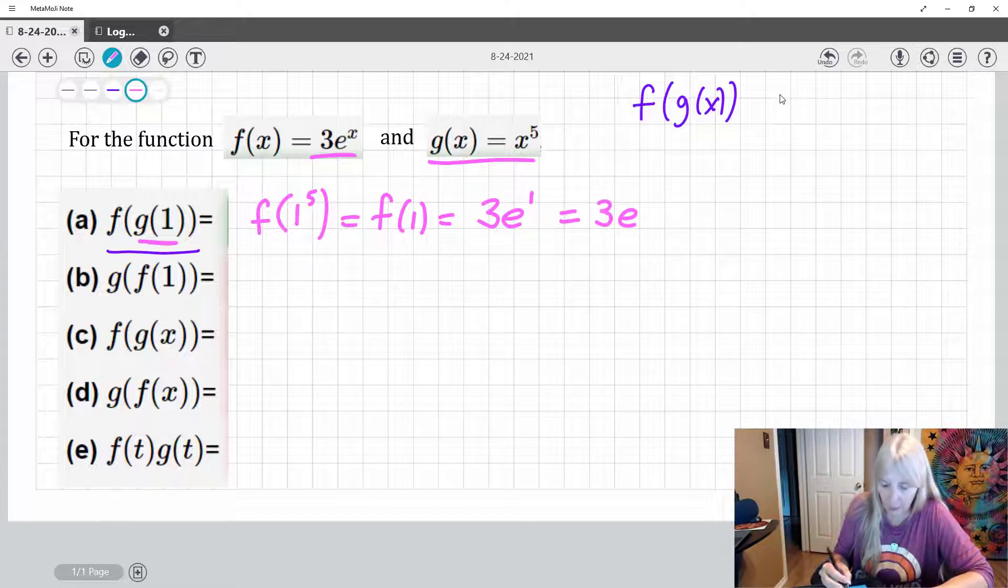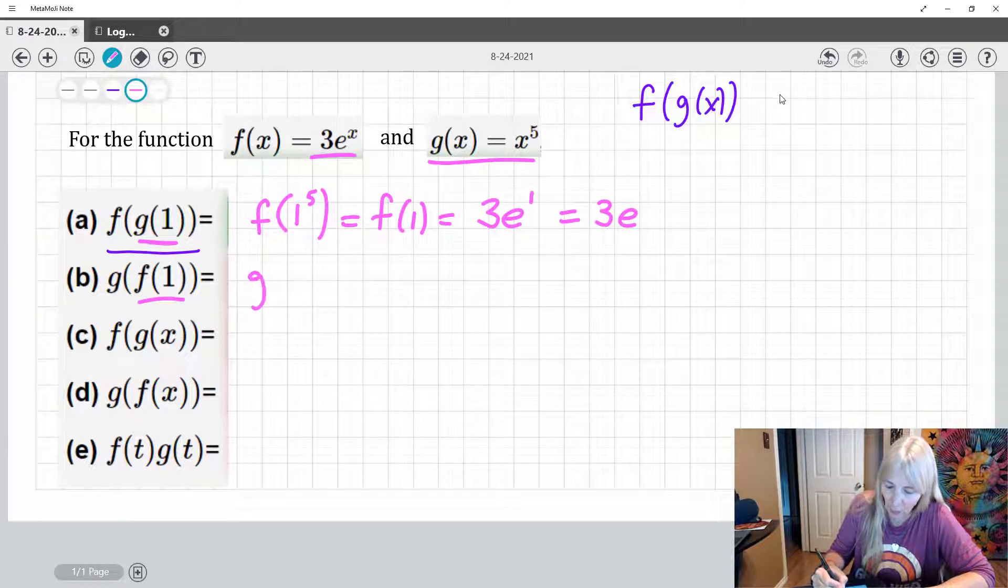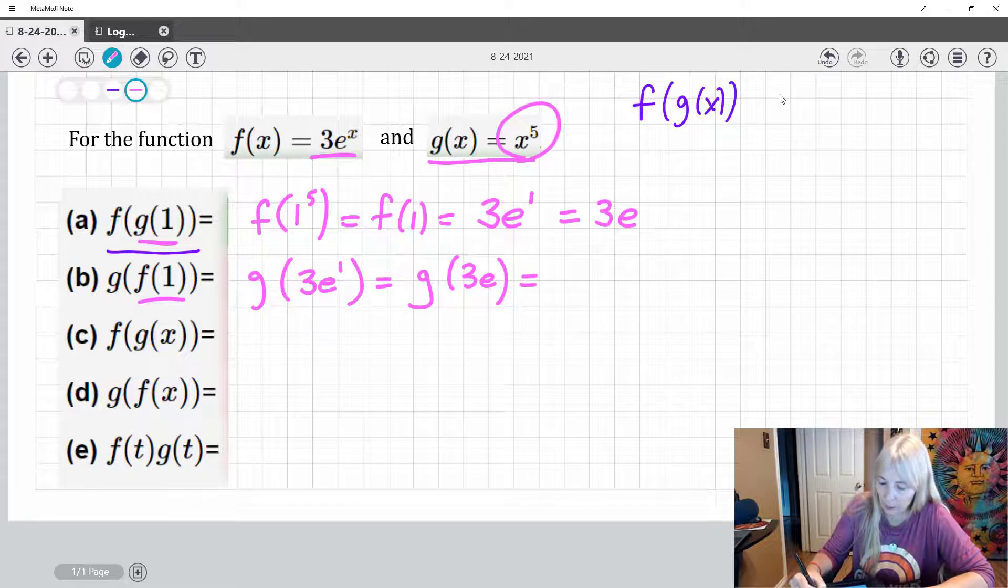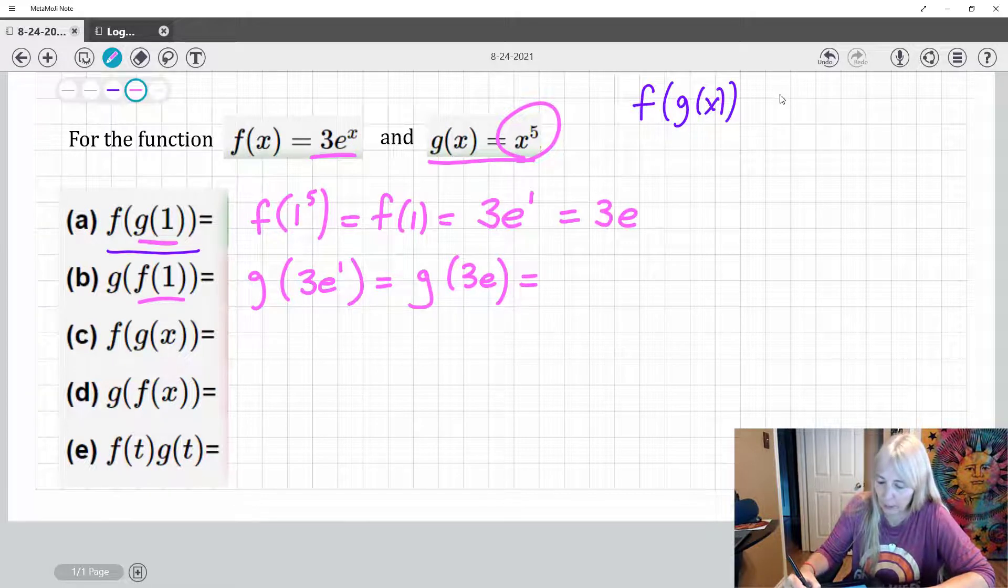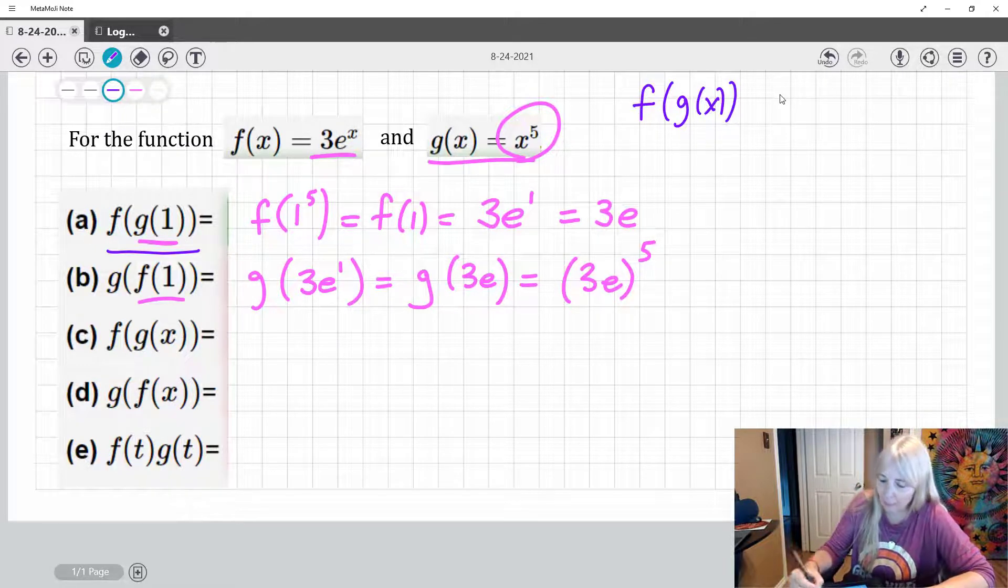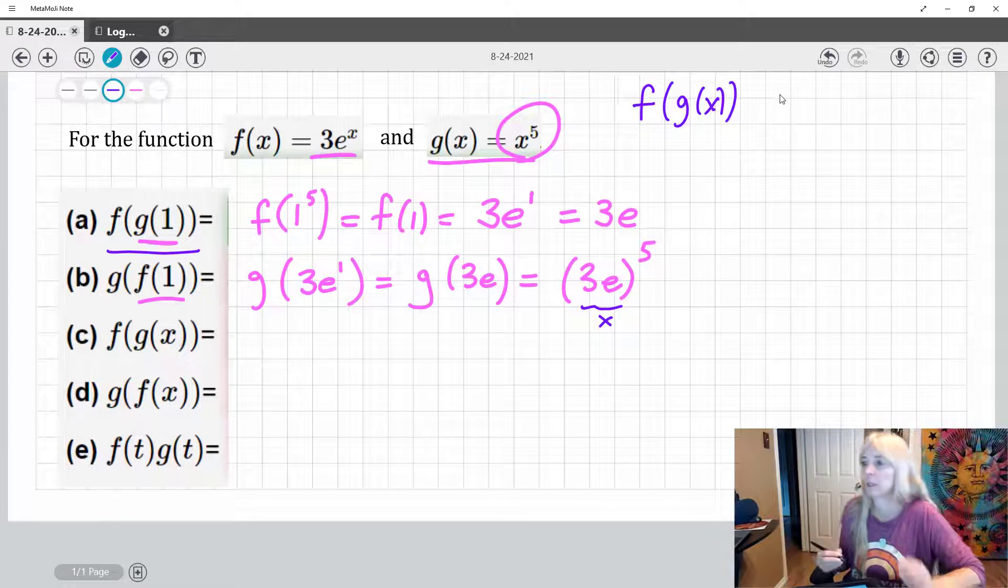You do the same thing. Again, I'm going to work inside. So I am actually going to plug in one and I get three e. Where I see an x, I'm going to plug in three e. So three e to the fifth power. So in other words, and that might look weird, but that's where that x was, right? All right.